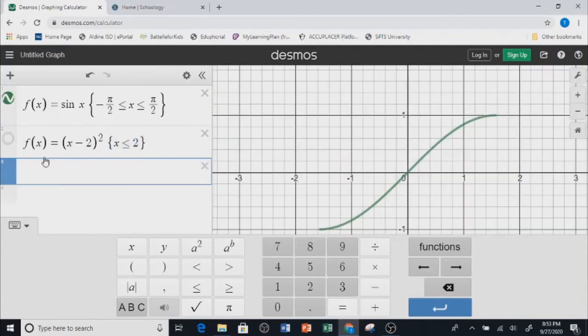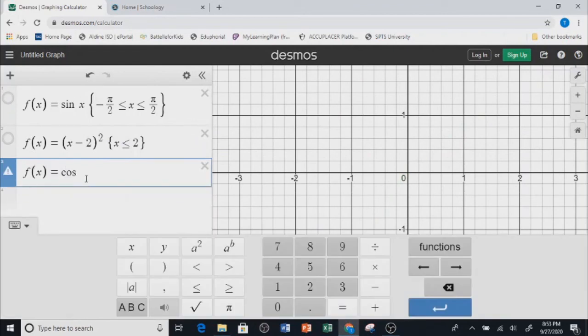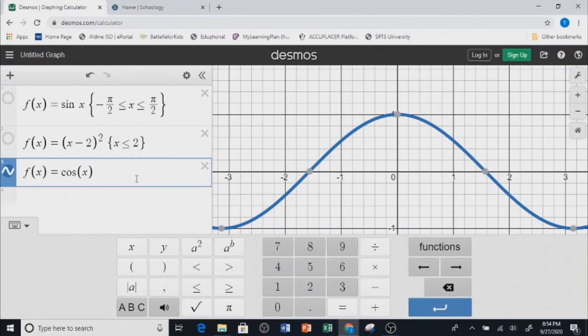If you want to do one more example, we can do cosine. If I say cosine of x, let's say I want to restrict this from 0 to π. We can just say 0 is less than or equal to x, which is less than or equal to π.